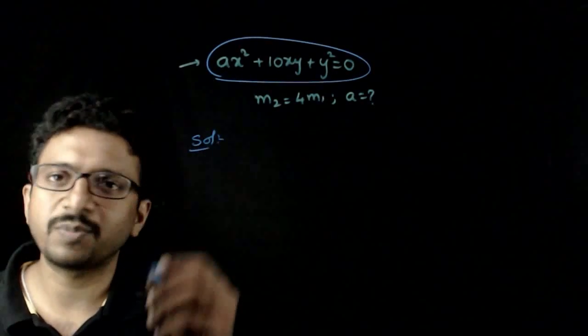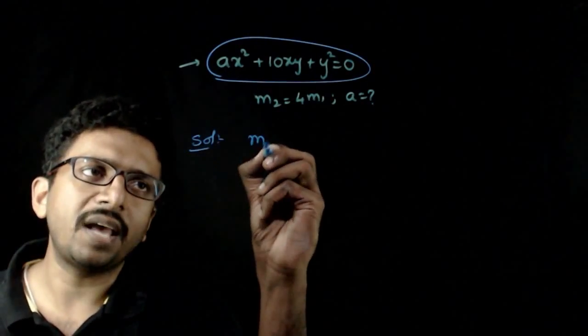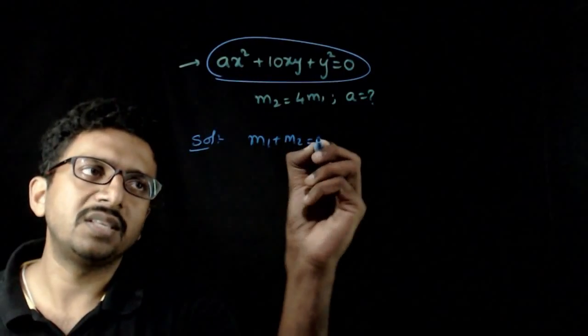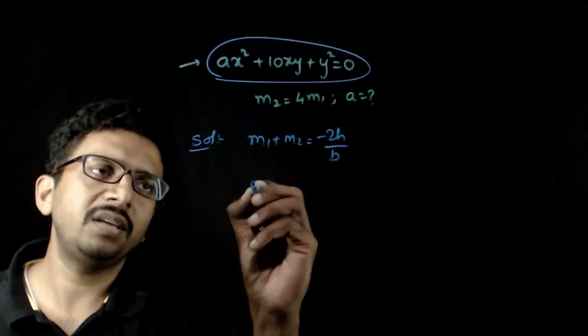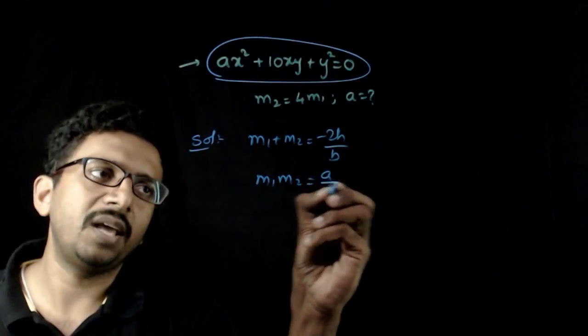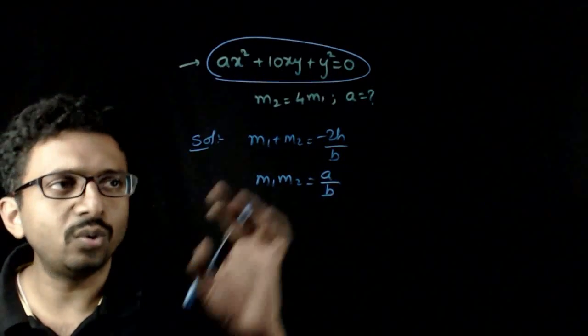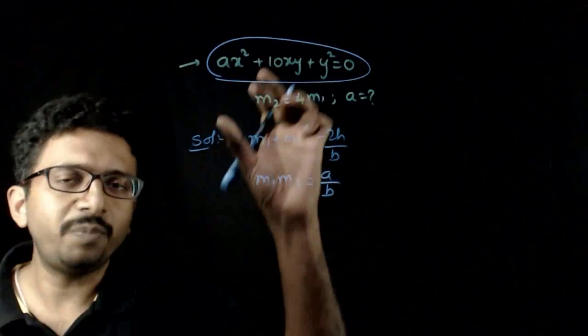Let us create equations corresponding to the information. We know that m₁ + m₂ is equal to -2h/b, and m₁m₂ is equal to a/b. These are the two conditions corresponding to the pair of lines.